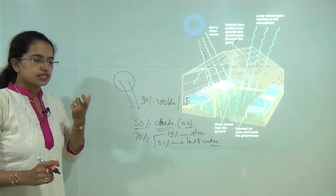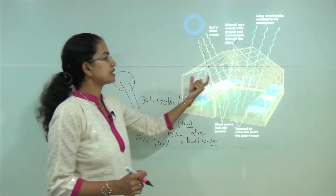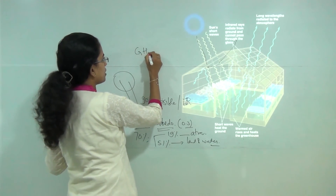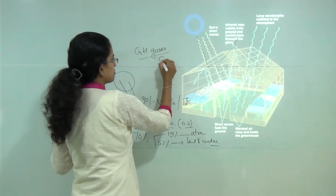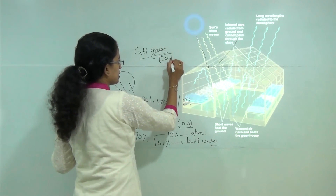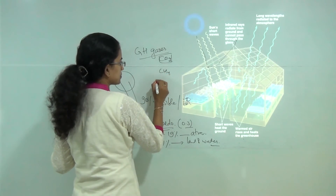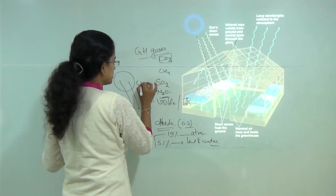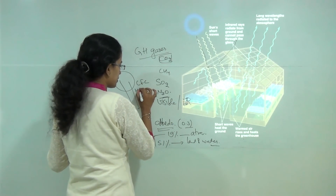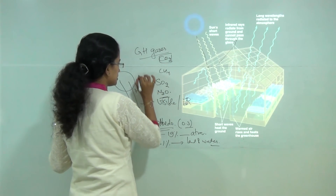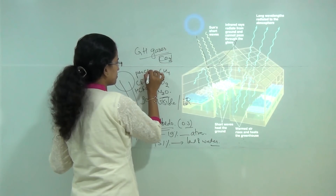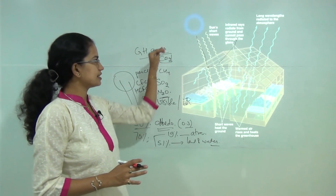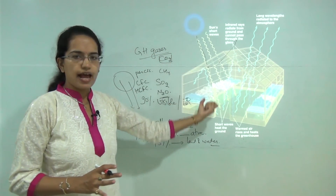There are some gases that predominantly help in the process of heating — such gases are known as greenhouse gases. The most common is carbon dioxide, then methane, sulphur dioxide, nitrous oxide, CFCs, hydro-chlorofluorocarbons, per-chlorofluorocarbons, and so on. There is a long list of gases that act as greenhouse gases and trap energy.